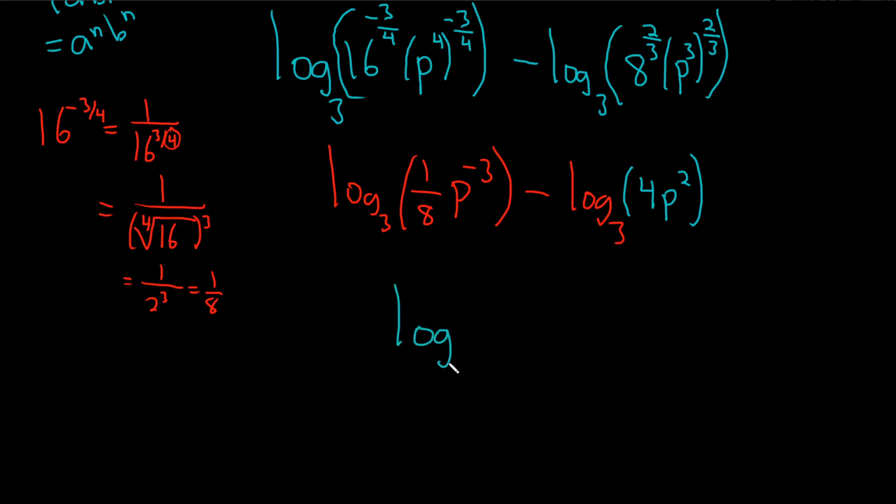So log base 3. Now, we're going to divide. It'll be this divided by this. So it'll be 1 eighth P to the negative 3. That's in the numerator. Over 4 P squared. 4 P squared.